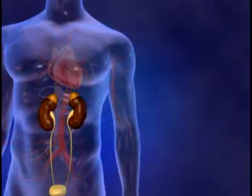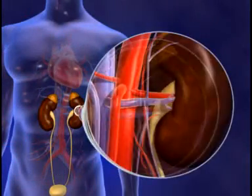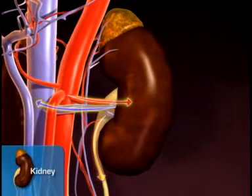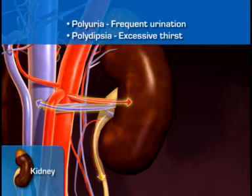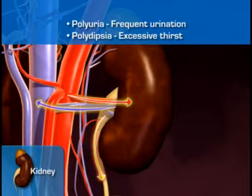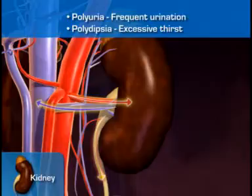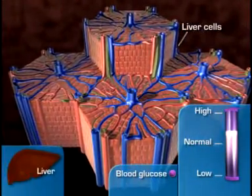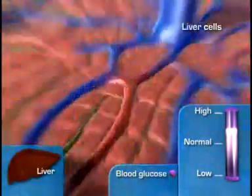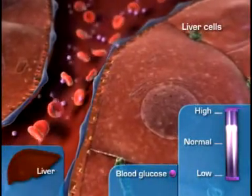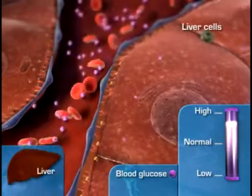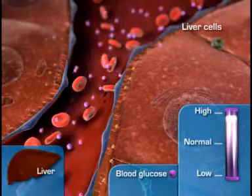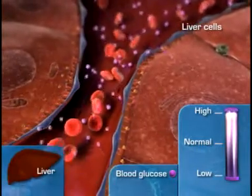As excess fluid is eliminated by the kidneys, osmotic diuresis often leads to frequent urination called polyuria. Polyuria, along with polydipsia — or excessive thirst — are two common symptoms of diabetes. Meanwhile, the liver converts the liberated amino acids into urea and still more glucose, contributing to further hyperglycemia and glycosuria, which leads to even greater electrolyte imbalance, even as the kidneys become increasingly unable to process and excrete the rising levels of glucose in the urine.